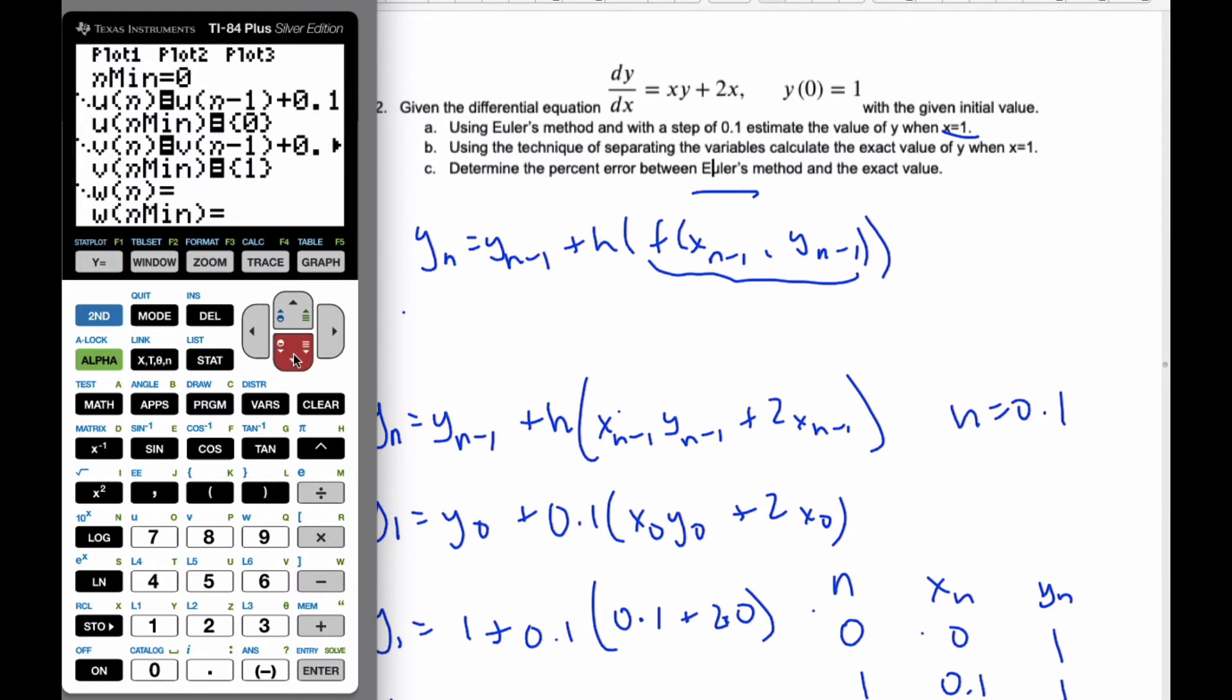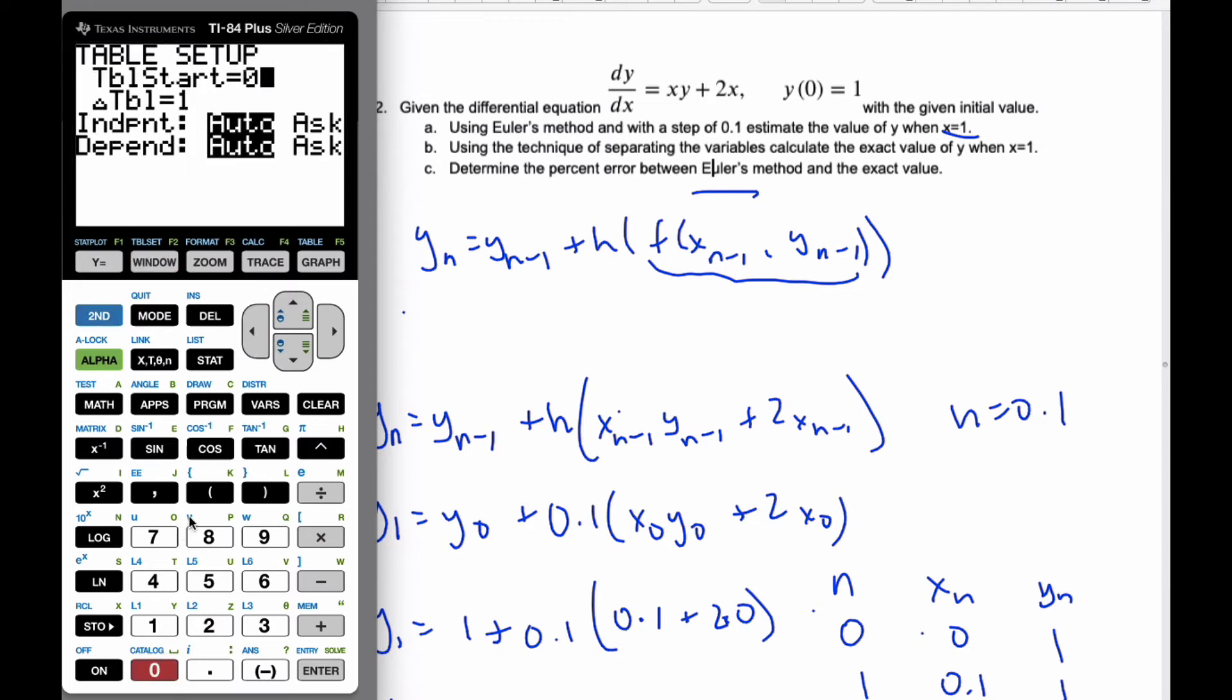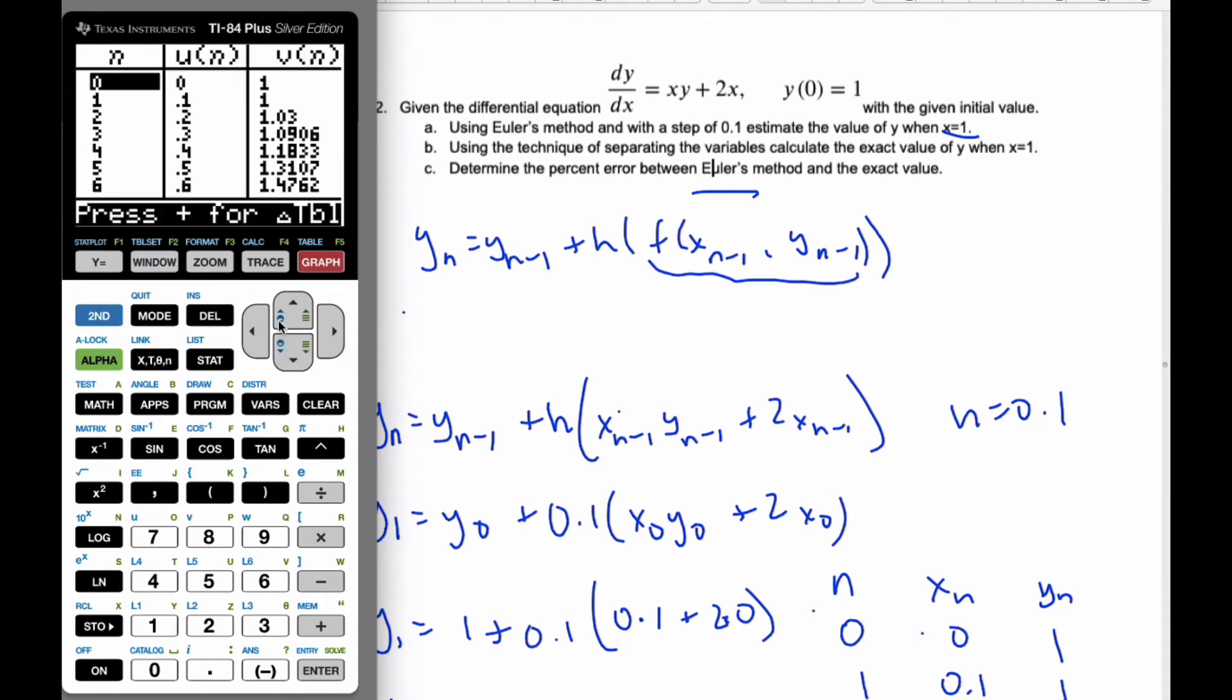When I go down to this one, I've got this is my y n minus 1, plus 0.1. I'm going to type all of this in. It's a lot to type in. It's a lot of parentheses, and you can't see a lot, so be careful. And then my v0 is equal to 1. And now when I go to my table, well, table set, I'm going to start at 0. I'm going to go by 1s, and then I'm going to go here.